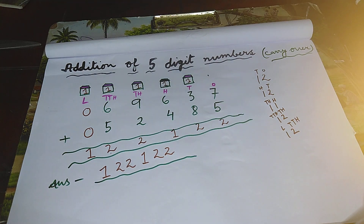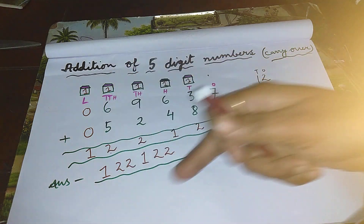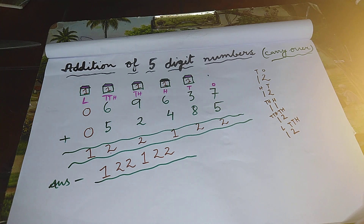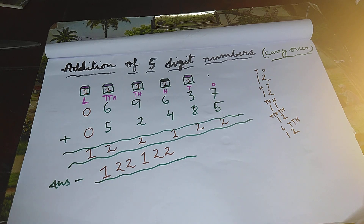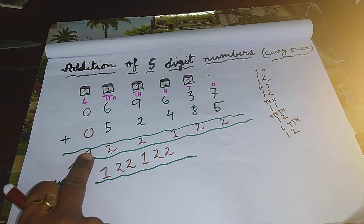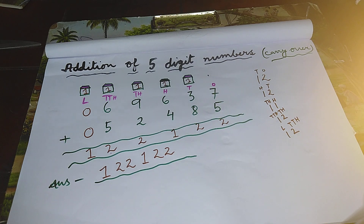Children, go to my channel and check the videos on addition of three-digit numbers and addition of four-digit numbers with carryover. That method is also genuine, this method is also genuine — both are correct. I have made this column so that you can be clear how this digit genuinely exists. Thank you, children. Practice well.